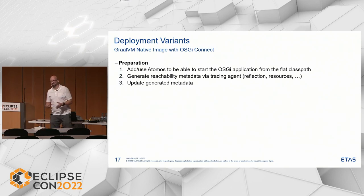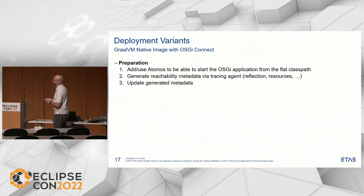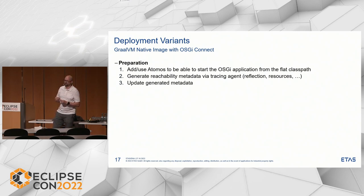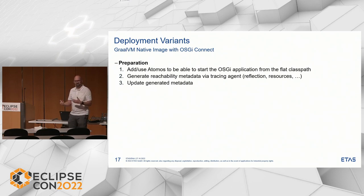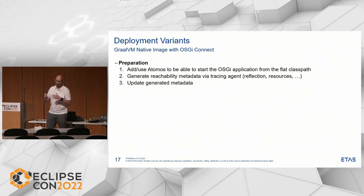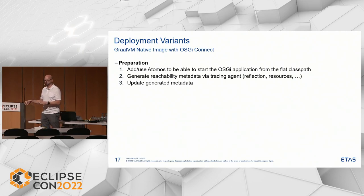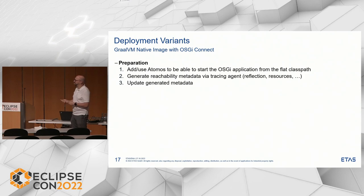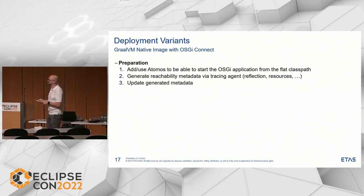What do I need to do in preparation to make it work? I need to add the Atomos project, which is the implementation of the OSGI Connect specification, to my application. I need to generate the so-called reachability metadata, because OSGI is highly reflective and dynamic. The tracing agent — documentation on the GraalVM page — helps with this. Even the generated stuff didn't work for me entirely, so I had to update things. The Atomos Maven plugin handles the generation, but I'll tell you about my problem with it later.